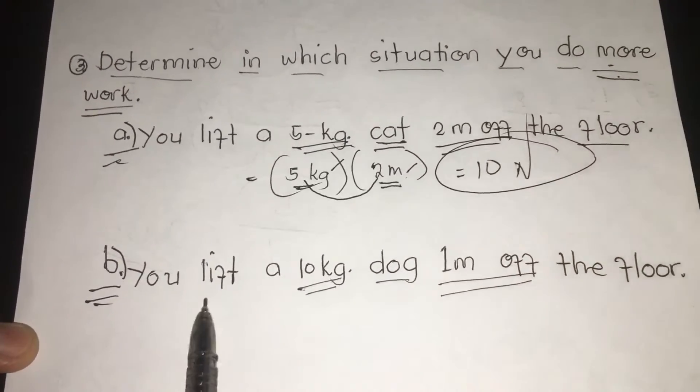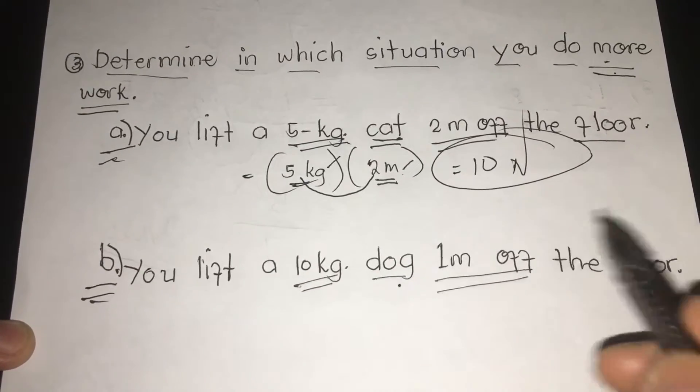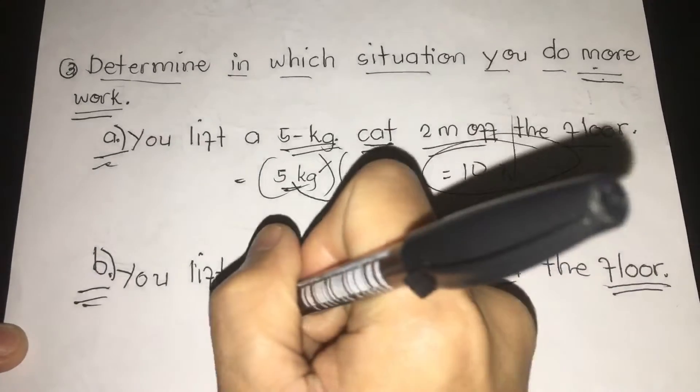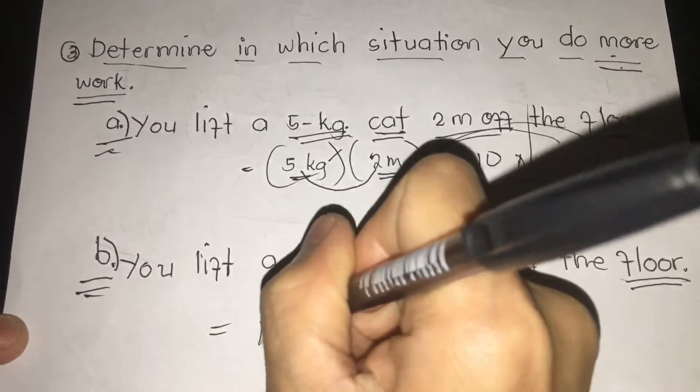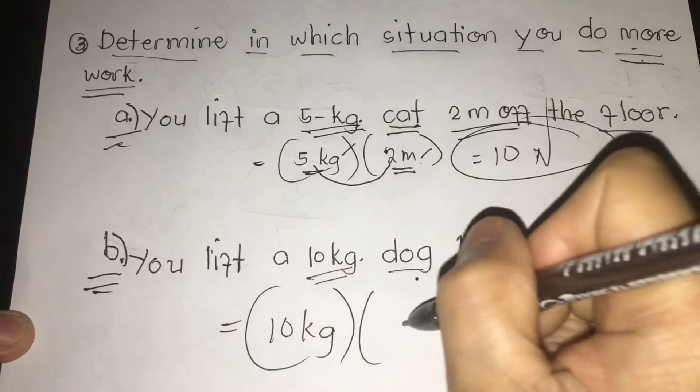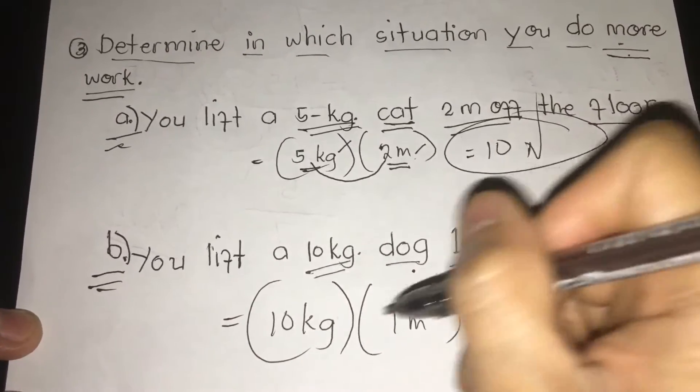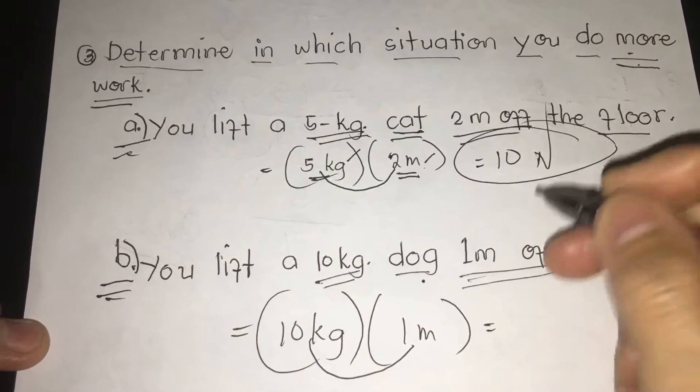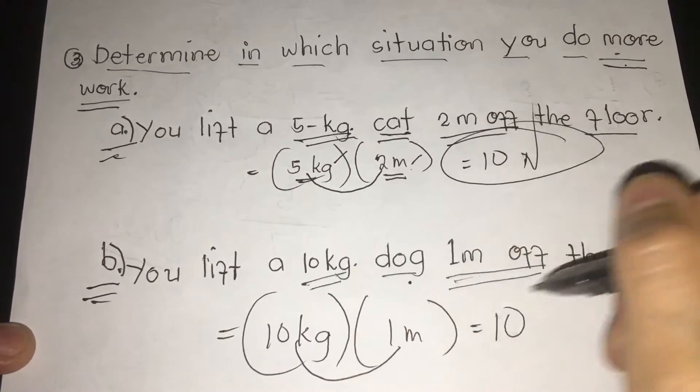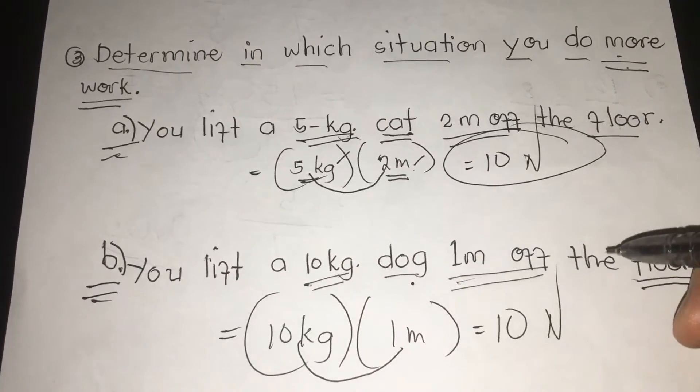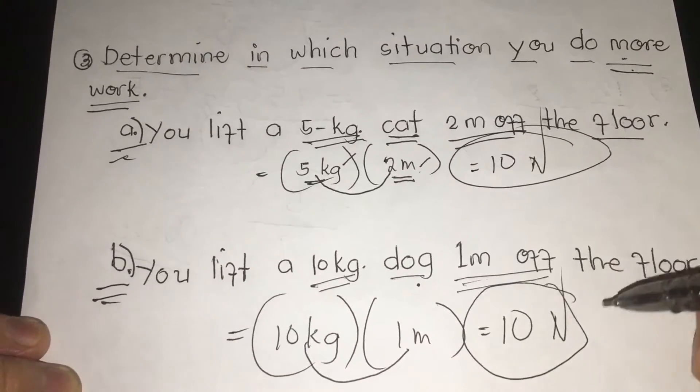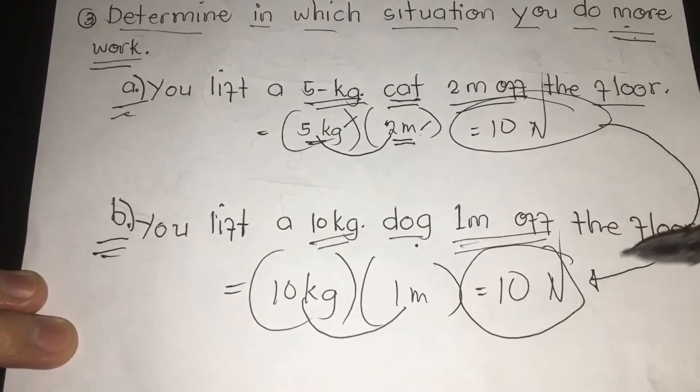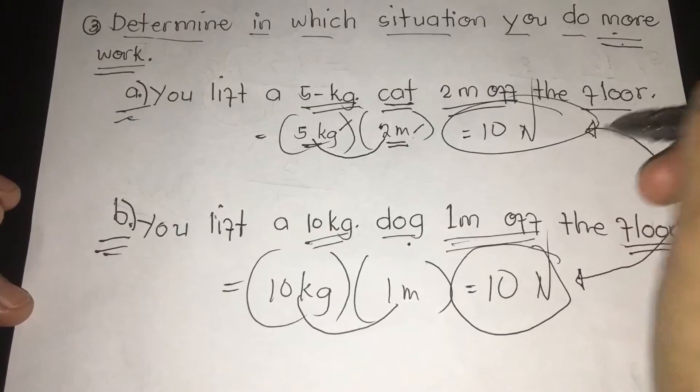Next, number 2. You lift a 10 kilogram dog 1 meter off the floor. So, simple. We are going to write it 10 kg or kilogram times 1 M. So, when you multiply, 10 times 1, that's a whole number. So, we are going to write it 10. Kilogram and meters. So, we are going to change it to N or Newton. The answer for letter A and B is still the same.